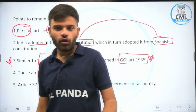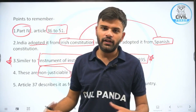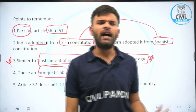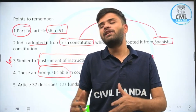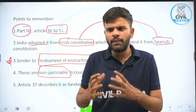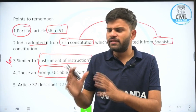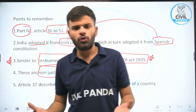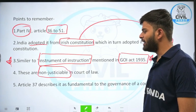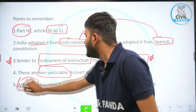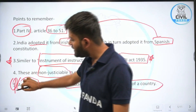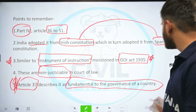Being non-justiciable means you cannot go to any court and say the government is not responding to DPSPs or not formulating policy in line with them. DPSP stands for Directive Principles of State Policy — whenever a state or government formulates any policy, it should keep in mind certain things about certain people, sections, and sectors. DPSPs are non-justiciable as compared to fundamental rights, which are justiciable. Article 37 describes DPSPs as fundamental to the governance of the country.